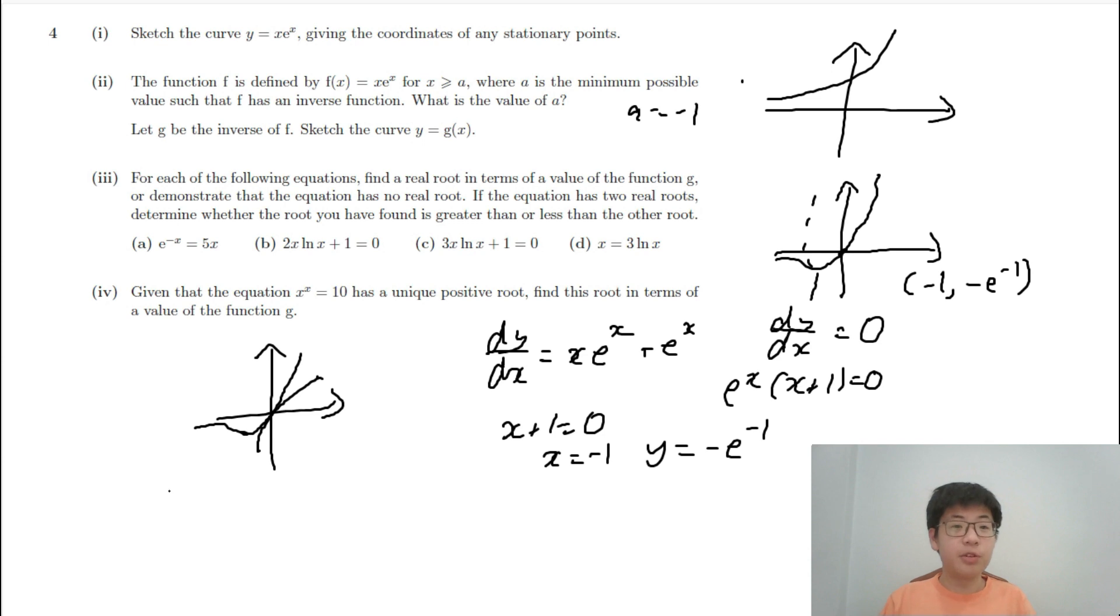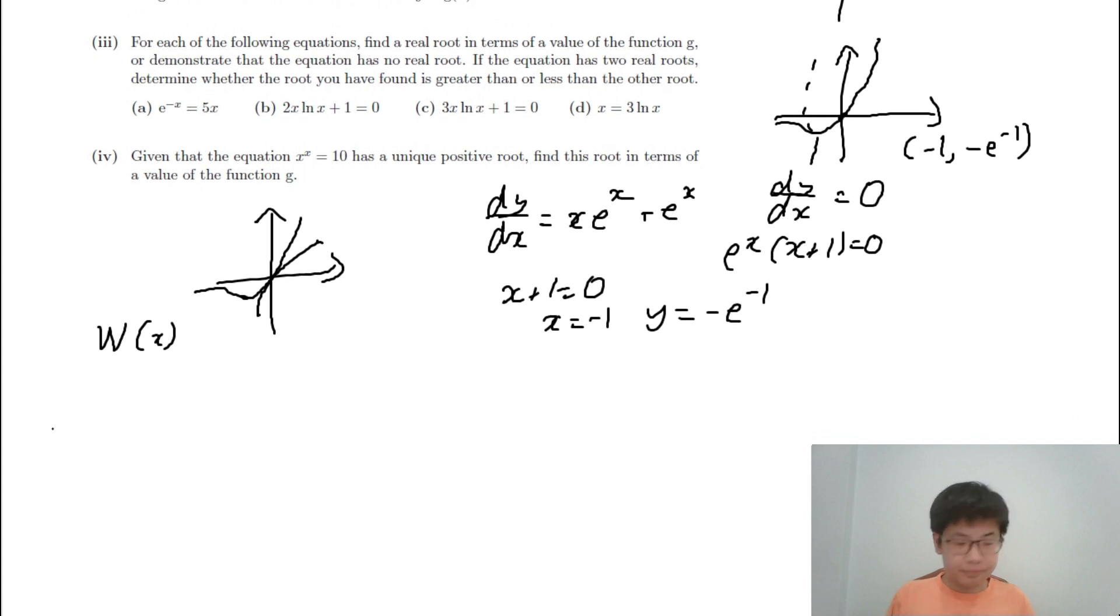For each of the following equations, find a real root in terms of a value of the function g. So let us call this function W instead of g because W(x) or the Lambert W function is the most commonly accepted name. Let us find a real root for these. So for part a, let us multiply both sides by e^x. This will get xe^x = 1/5. And then x = W(1/5).